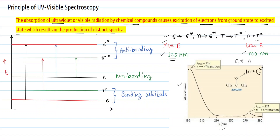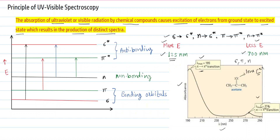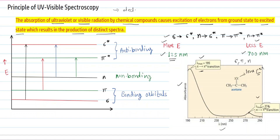Out of these, the n→pi-star transition has less energy and therefore a longer wavelength — here the wavelength is 274 nanometers. For the pi→pi-star transition, the wavelength is 195 nanometers. In this way, acetone gives two peaks corresponding to pi→pi-star and n→pi-star transitions. Ultraviolet and visible spectroscopy causes electronic excitation and electronic transitions, which is why this spectroscopy is also called electronic spectroscopy.